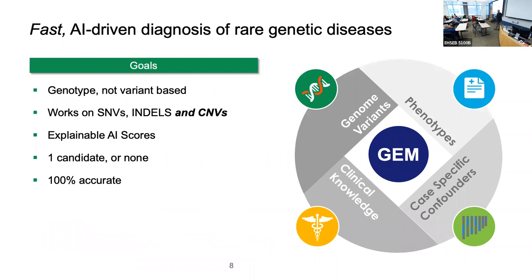The goal of GEM is to provide fast, AI-driven diagnosis of rare disease. We focused on several key goals. First, the tool must be genotype-based, not variant-based. The phrase 'variant prioritization' is commonly used, but the operative cause of Mendelian disease is a damaged genotype, not a damaging variant — which is true of every autosomal recessive disease.